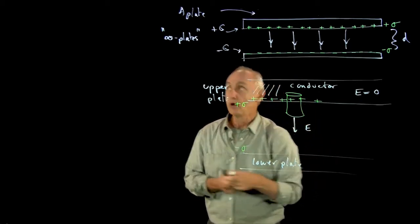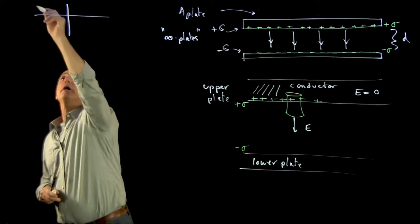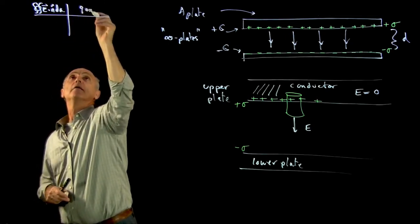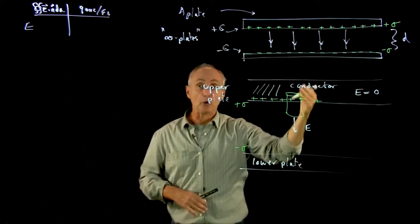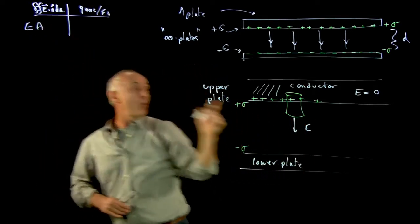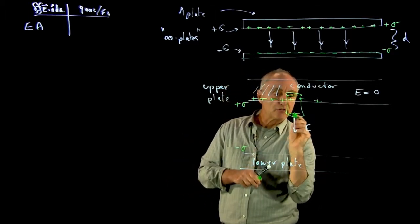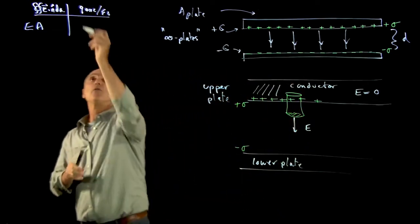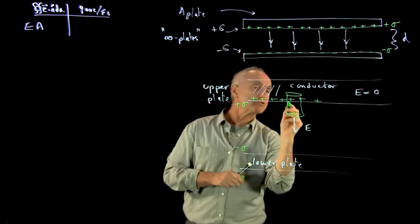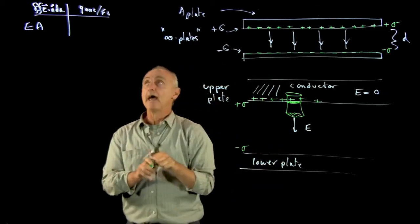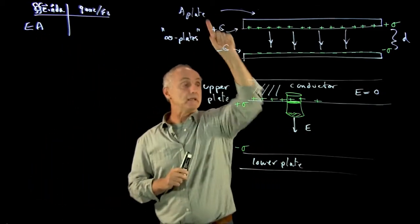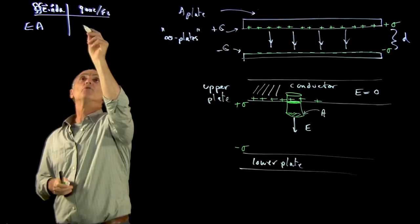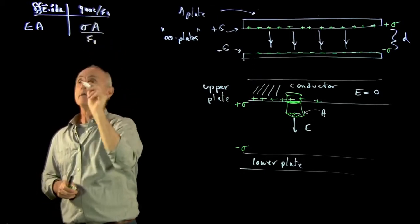Because E is zero on the top, by Gauss's law — and we've done this calculation before — the only flux is on the lower surface, because it's the physical property of conductors that the E field is zero inside the conductor. Over here the charge enclosed is a surface charge density, which I'll shade in. This is the area of the Gaussian surface, and that equals sigma times the area of the Gaussian surface divided by epsilon-zero.